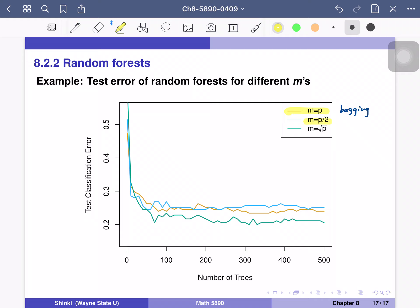And m is p over 2, so just half of variables. That is the blue one. And the green one is m equal to square root of p. So the yellow one is bagging, this is the baseline. But actually, if we choose m equal to square root of p, we get better test classification error.